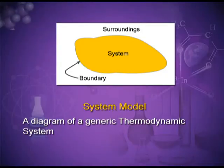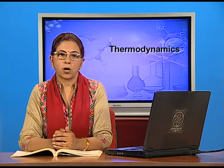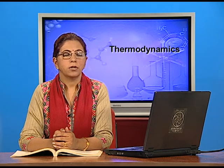The system is that part of the universe which is under thermodynamic consideration. For example, if we are doing an experiment in a beaker or a test tube, then that beaker or test tube is the system and the rest of the universe is the surroundings. Only that part of the surroundings which is interacting with the system is known as the surroundings. There can be a real or imaginary boundary between the system and the surroundings.